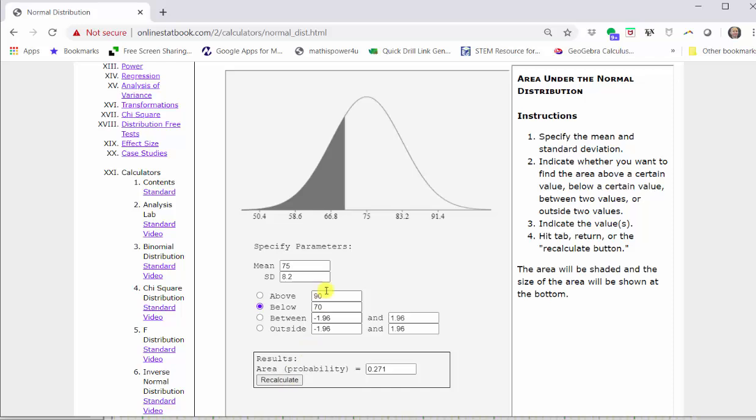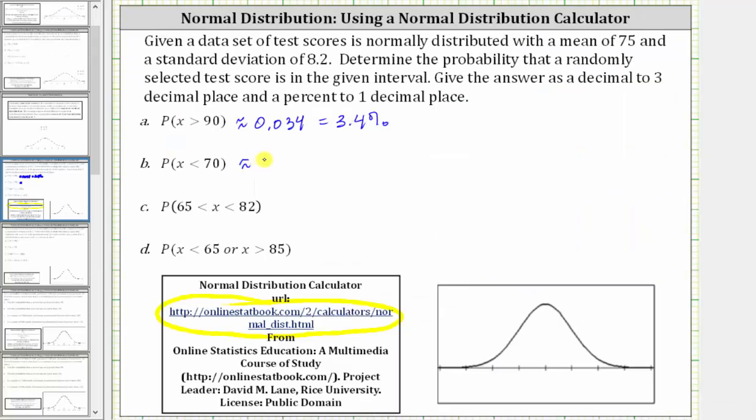Again, looking at the graph, notice how it shades the area below the curve to the left of 70. This area is equal to the probability the test score is less than 70, which is shown below as 0.271, which is equal to 27.1%.